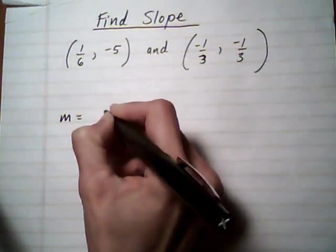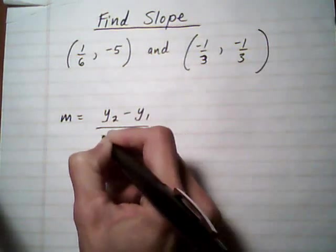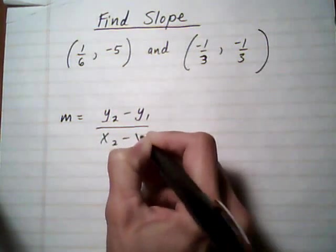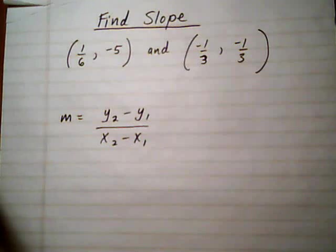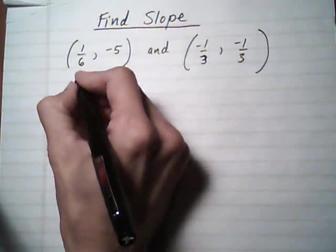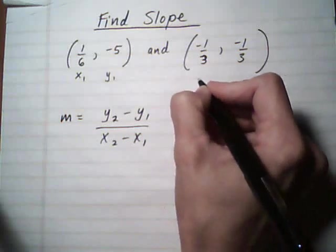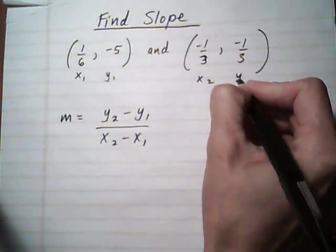m equals the change in y, y2 minus y1, over the change in x, x2 minus x1. We've got to decide who's point 1 and who's point 2, and it doesn't even matter which one you pick. I'm just going to pick this first one here as point 1, which means that's x1 and this is y1. Here's x2 and y2.